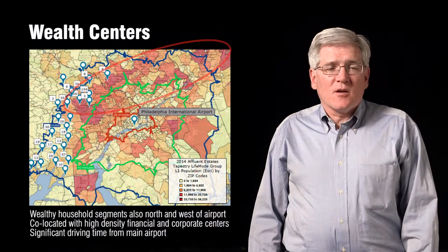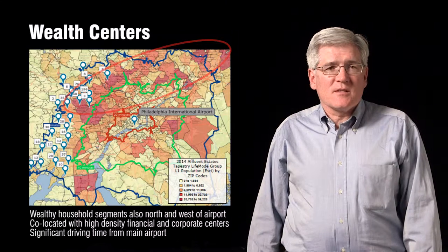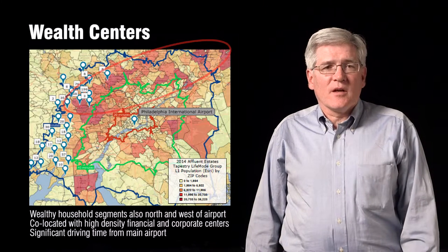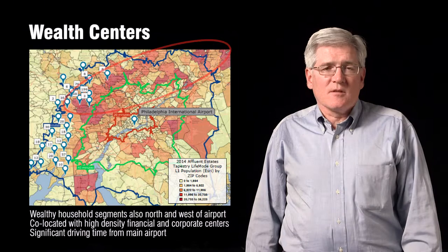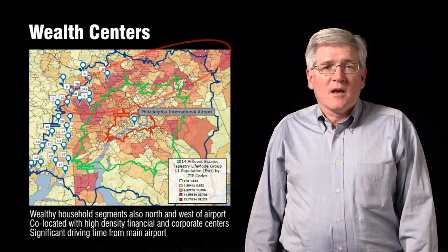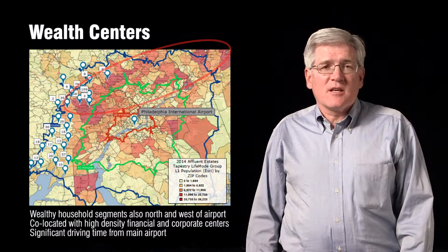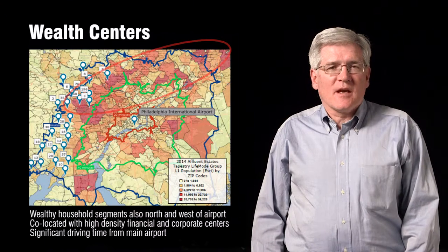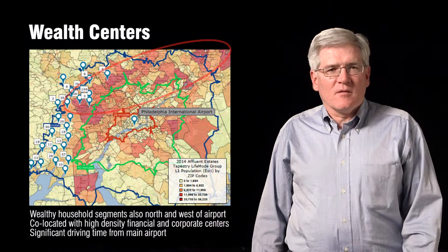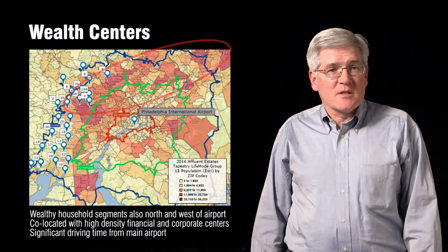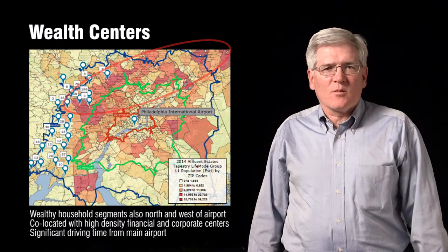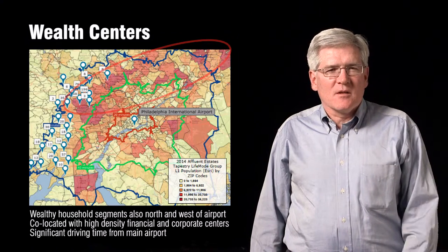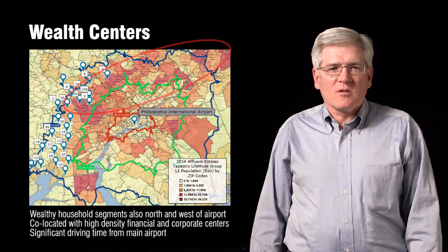Second, I also looked at U.S. Census data — the NAICS code for the finance and insurance industry — and you can see in that same region how dense that area is for these kinds of businesses. This area north and west of Philadelphia Airport looks like a good place to look more closely.